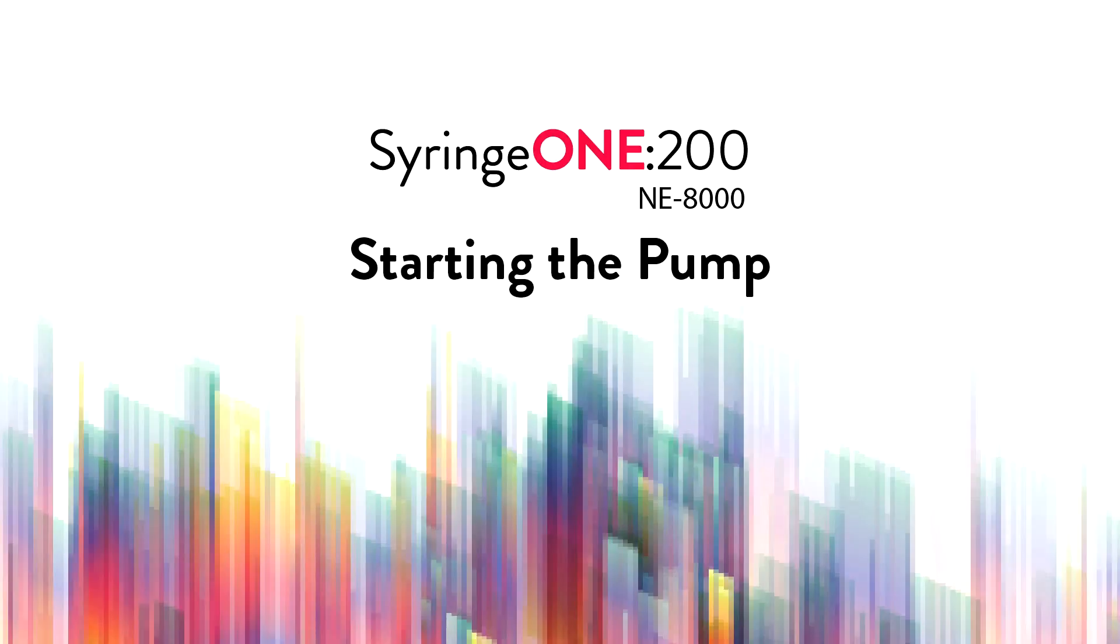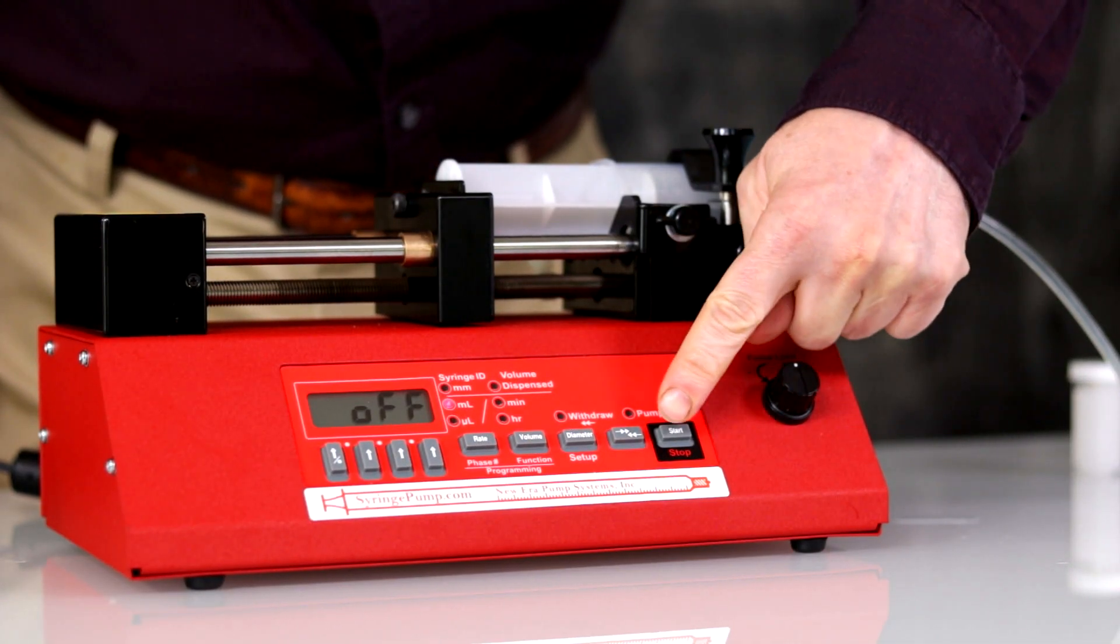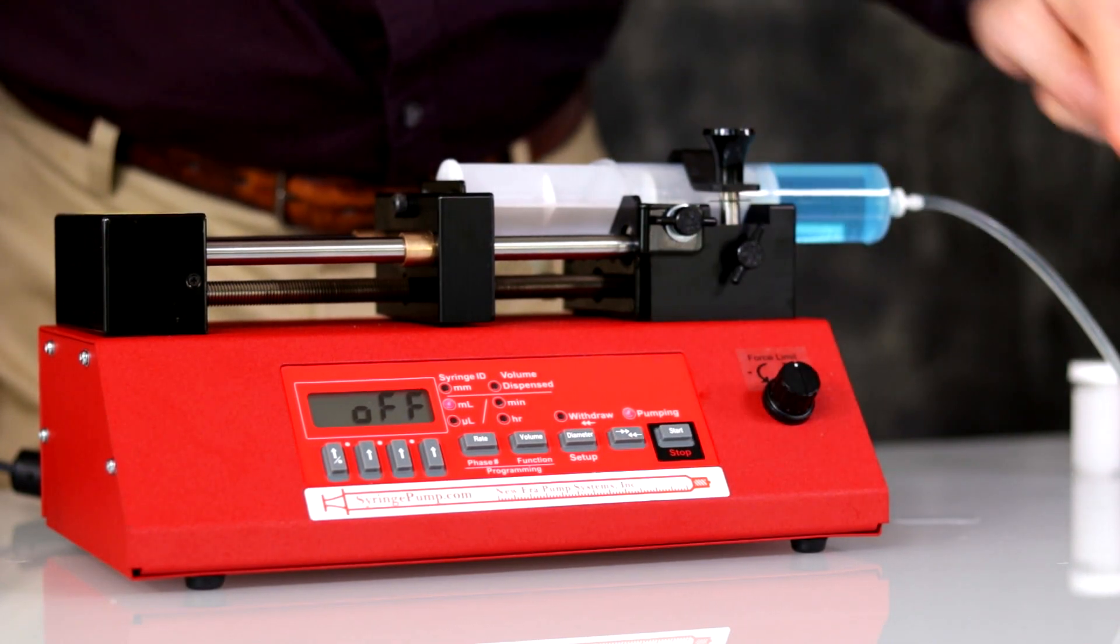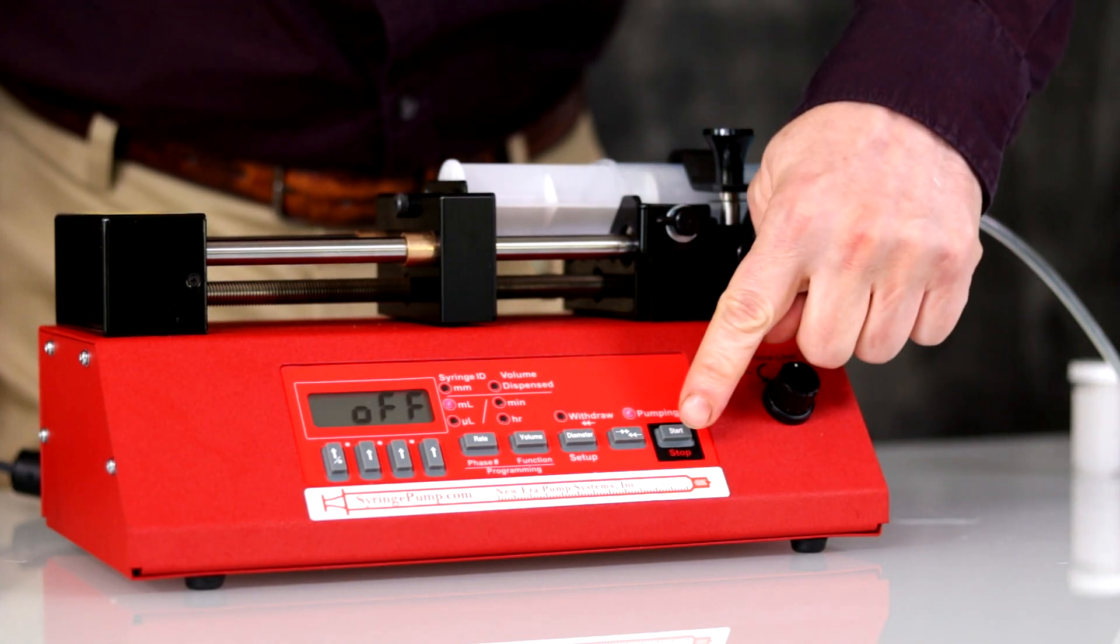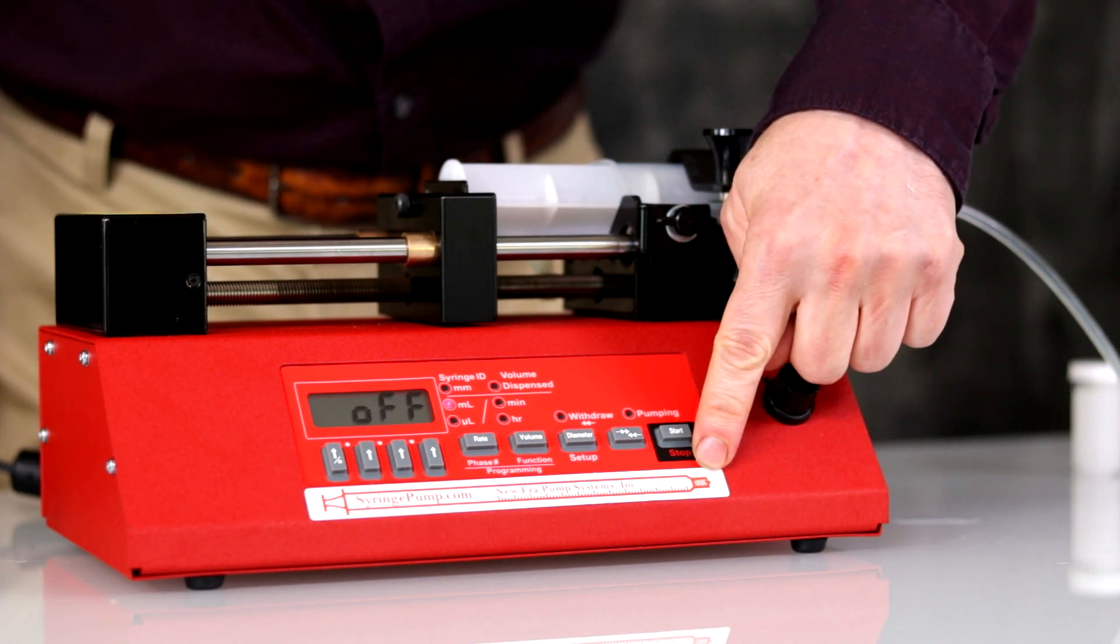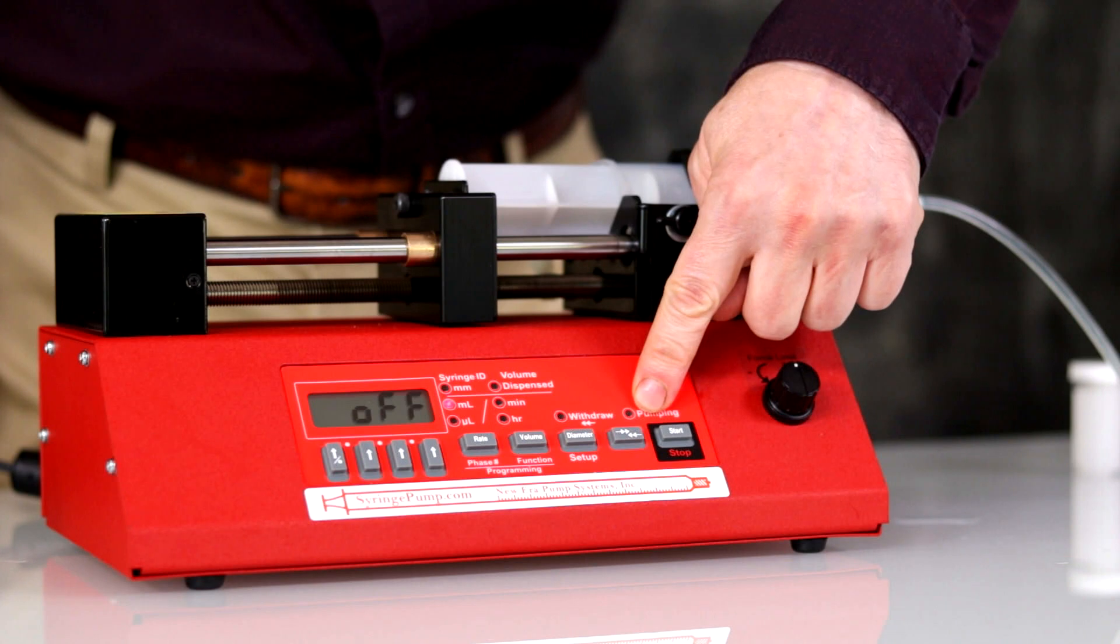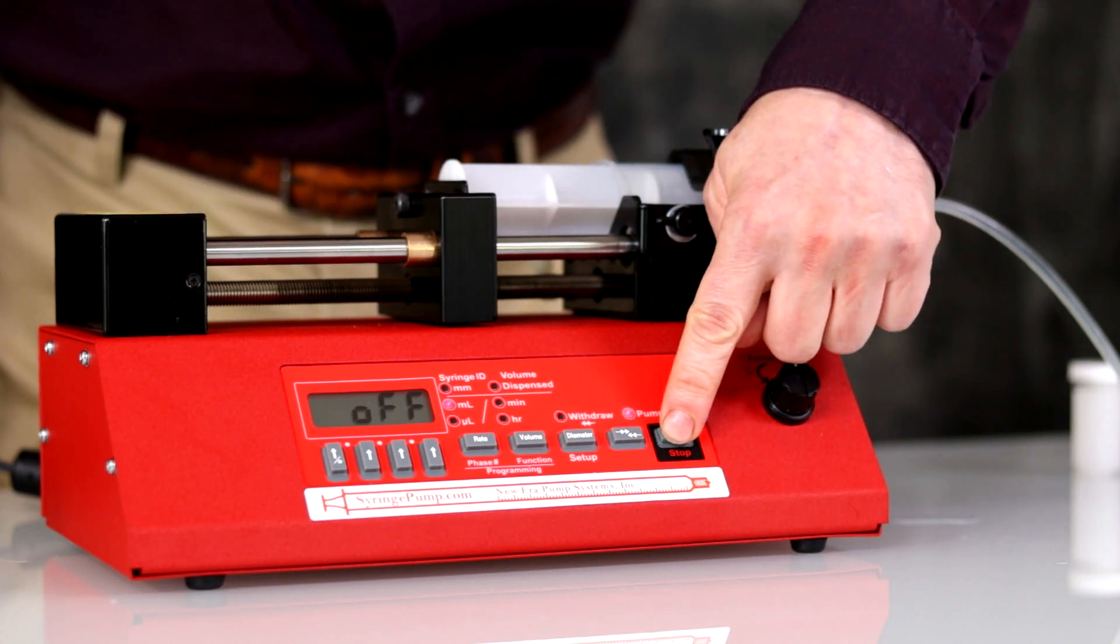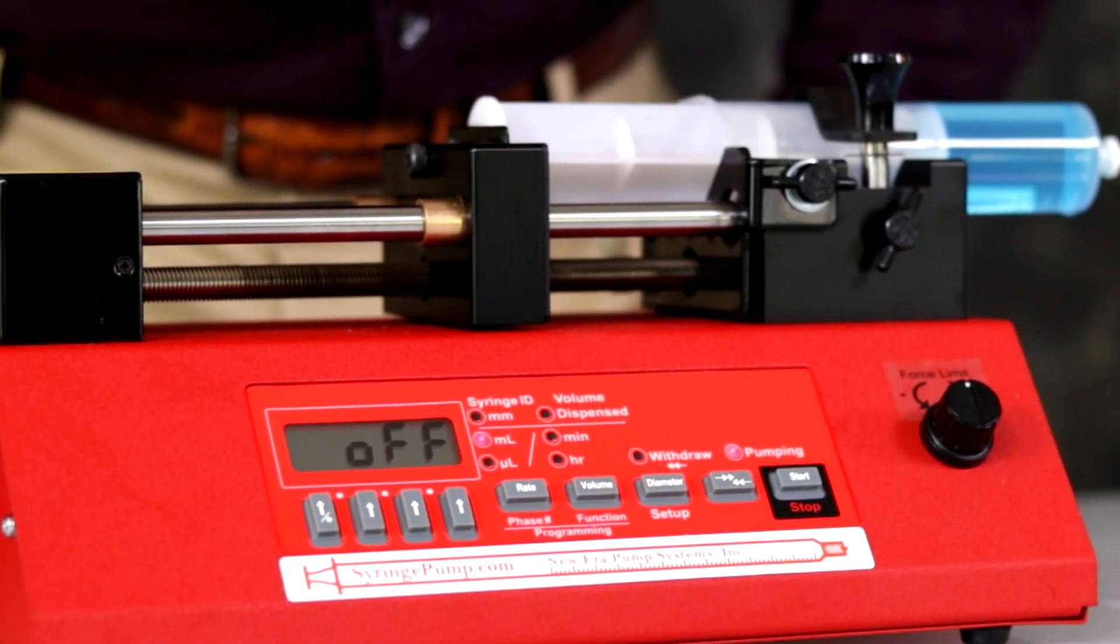NE-8000 starting the pump. Ready for operation. To start your pumping program, simply press and release the start key. Now the pump is pumping. The pump will continue to pump continuously until you stop the pump. To stop the pump, press start again. Blinking indicates the program is paused and will continue where it left off when you press start again. If the pump hits the limit switch, it will stop automatically.